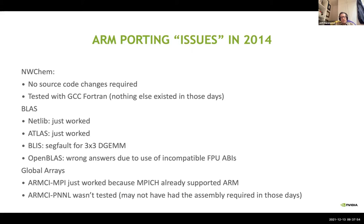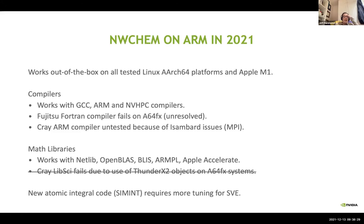I ported NWChem to ARM in 2014, but that really wasn't work. What I did was verify that NWChem worked, because NWChem tends to work well on new things. The only things that were problematic in those days were BLAS libraries — ARM was new and wasn't really good at double precision floating point. Mac M1 was, I think, one line code change in the build system and one macro change in the source code. All the BLAS libraries work, and there are basically no issues.